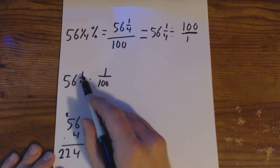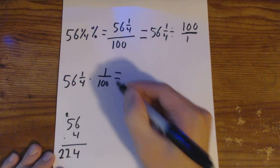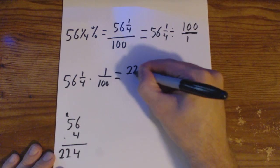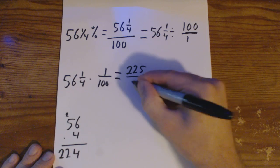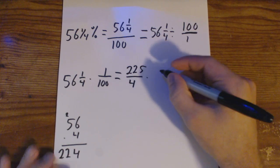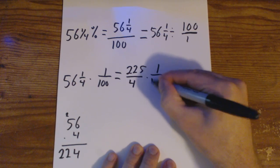We need to add that to the one already on top. So 224 plus 1 we have 225 over 4 times 1 over 100.